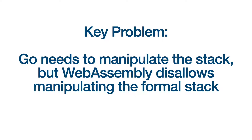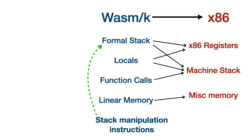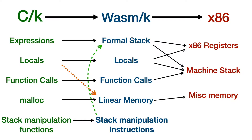The key problem is that Go needs a way to manipulate the stack, but WebAssembly disallows manipulating the formal stack, which forces Go to instead manipulate everything within linear memory. Our solution is to start with WebAssembly and build an extension, WASM-K, in which we add a small set of stack manipulation instructions. Compilers such as the Go compiler can emit these instructions, which will at runtime mutate the formal stack on their behalf. In addition to WASM-K, we also present a language CK — an extension to C adding support for first-class continuations — as a case study for how to effectively target WASM-K in a compiler.